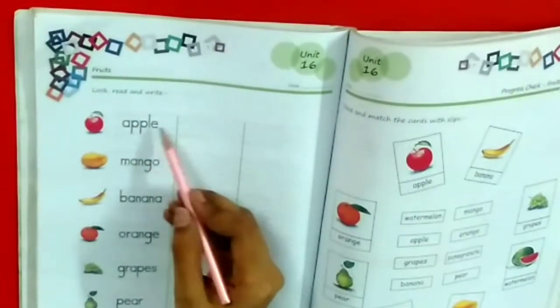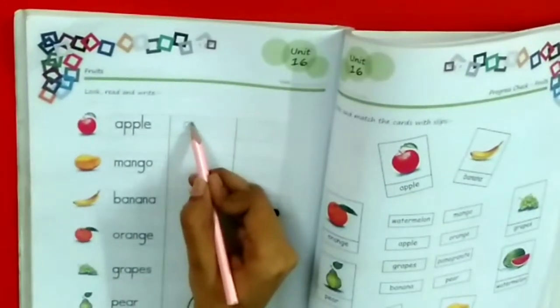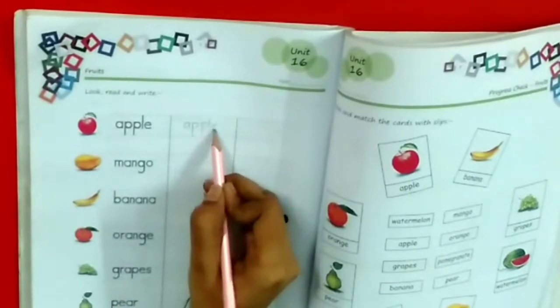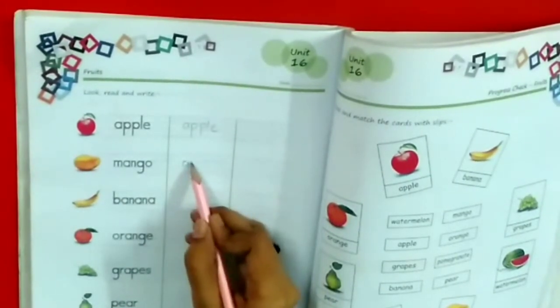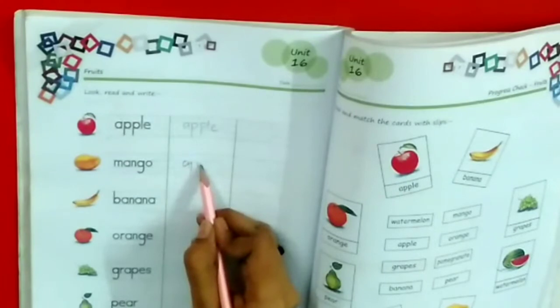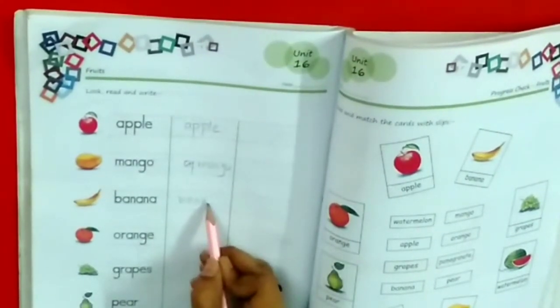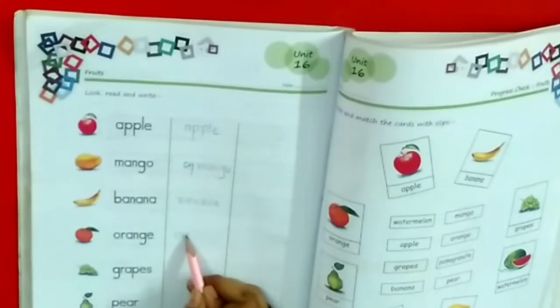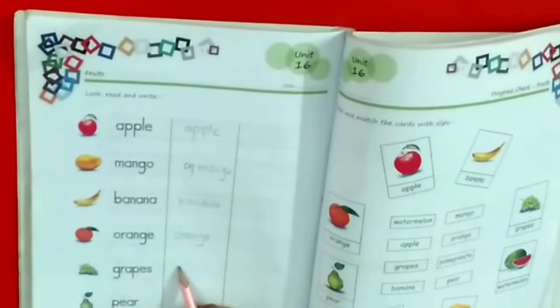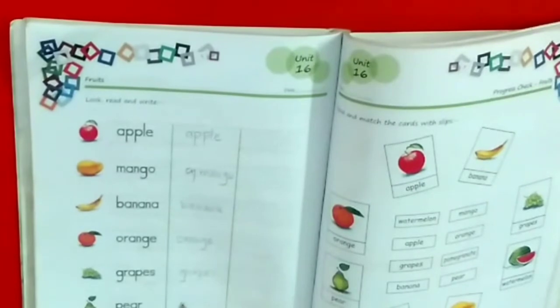We have to write the fruit names. We have to write the fruit names as it is read and write: mango, banana, orange, grapes, pear.